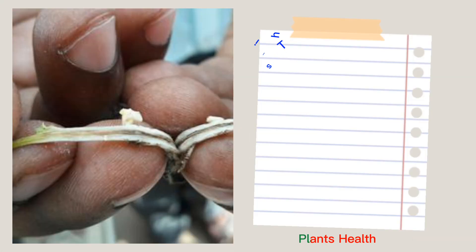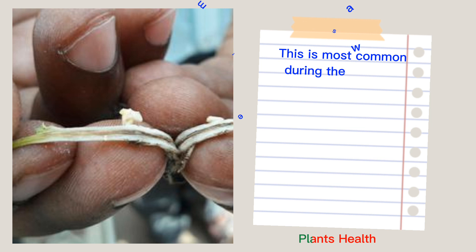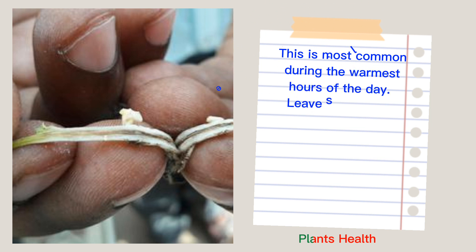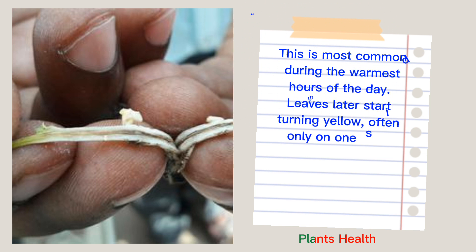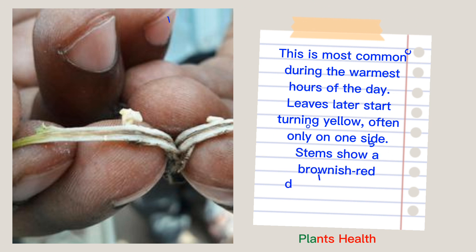This is most common during the warmest hours of the day. Leaves later start turning yellow, often only on one side. Stems show a brownish-red discoloration of the internal tissues.